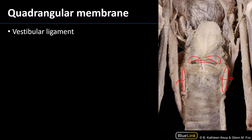The quadrangular membrane exists on either side and extends superiorly, with the aryepiglottic folds running from the arytenoid cartilage up to the epiglottis — those are the superior-most extent of the quadrangular membranes. So the quadrangular membranes run from the aryepiglottic folds superiorly down to the vestibular ligaments inferiorly.